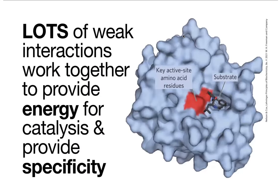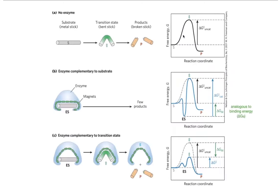One key way enzymes lower the activation barrier is by providing lots of favorable interactions to the transition state. We wouldn't want the enzyme to bind too tightly to the substrate, because that digs a deeper hole the leprechaun has to climb out of. But if we lower the transition state — if we provide favorable binding interactions to the transition state — we lower the activation barrier and allow us to get to the other side more easily.